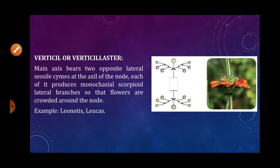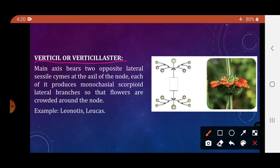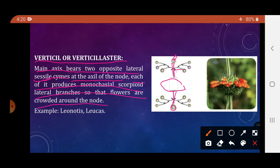The third special type is verticillaster inflorescence. The main axis bears two opposite lateral scorpioid cymose branches at the axil of the node, producing flowers crowded at the node in a whorled arrangement. Example: Leonotis and Leucas.